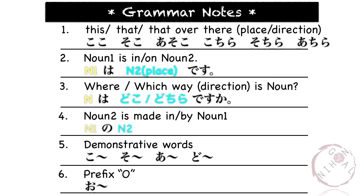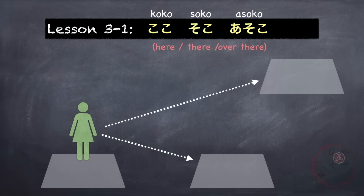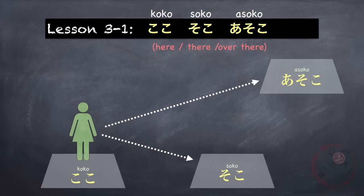The first grammar points are words that describe places or the position of objects. For example, ここ (koko) means 'here,' そこ (soko) means 'there,' and あそこ (asoko) means 'over there.' Koko describes the place where the speaker is. Soko is a little bit far from the speaker, and asoko is very far from the speaker.